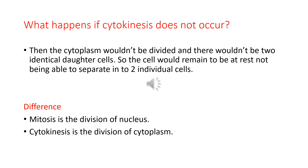What happens if cytokinesis does not occur? If cytokinesis does not occur, the cytoplasm would not be divided and there would not be two identical daughter cells. The cell would remain unable to separate into two individual cells — no division would take place.